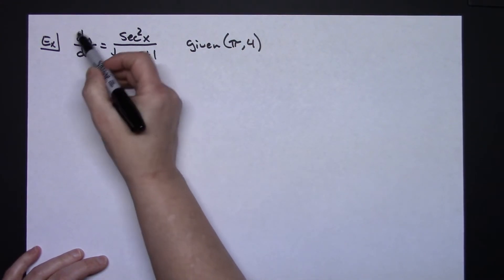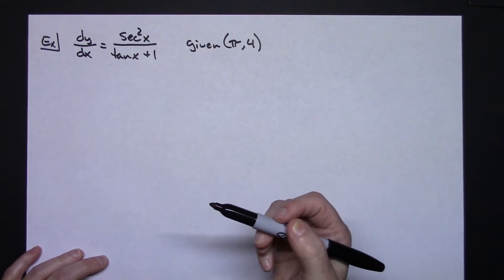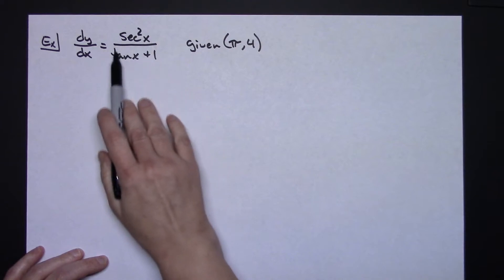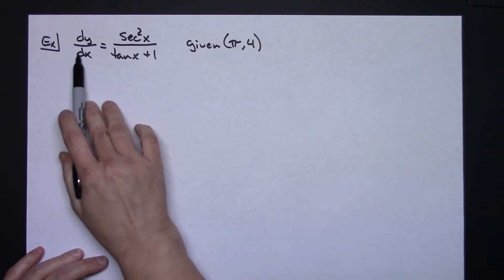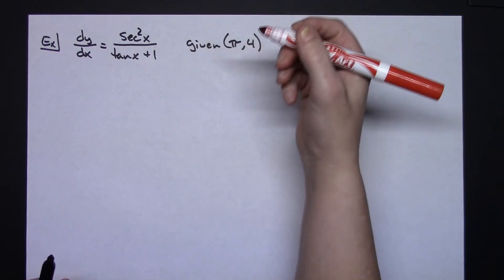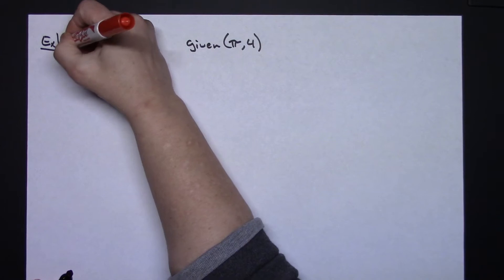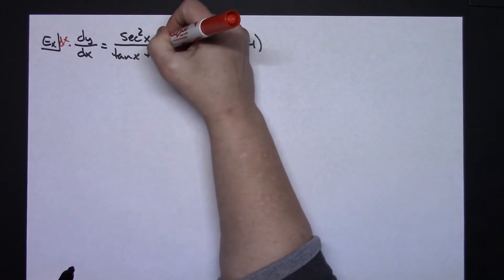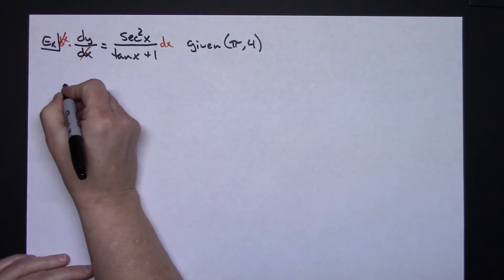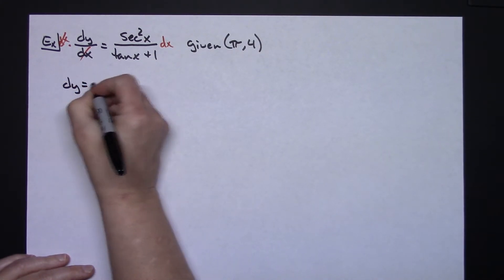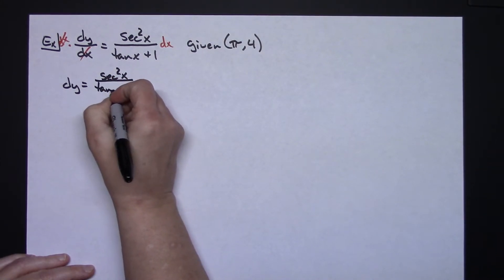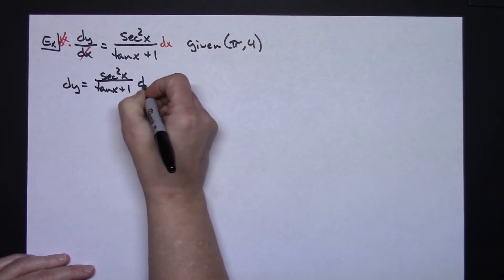The second equation is dy/dx = sec²x / (tan x + 1), with the ordered pair (π, 4). It's still a simple first-order differential equation and very easy to separate the variables since everything on the right already has x's. Multiplying both sides by dx, the dx on the left crosses out, giving dy = [sec²x / (tan x + 1)] dx.